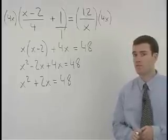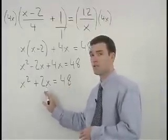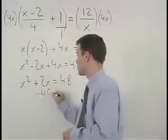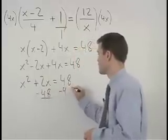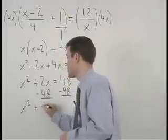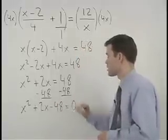So our next step is to move the 48 to the left side of the equation by subtracting 48 from both sides to get x squared plus 2x minus 48 equals 0.